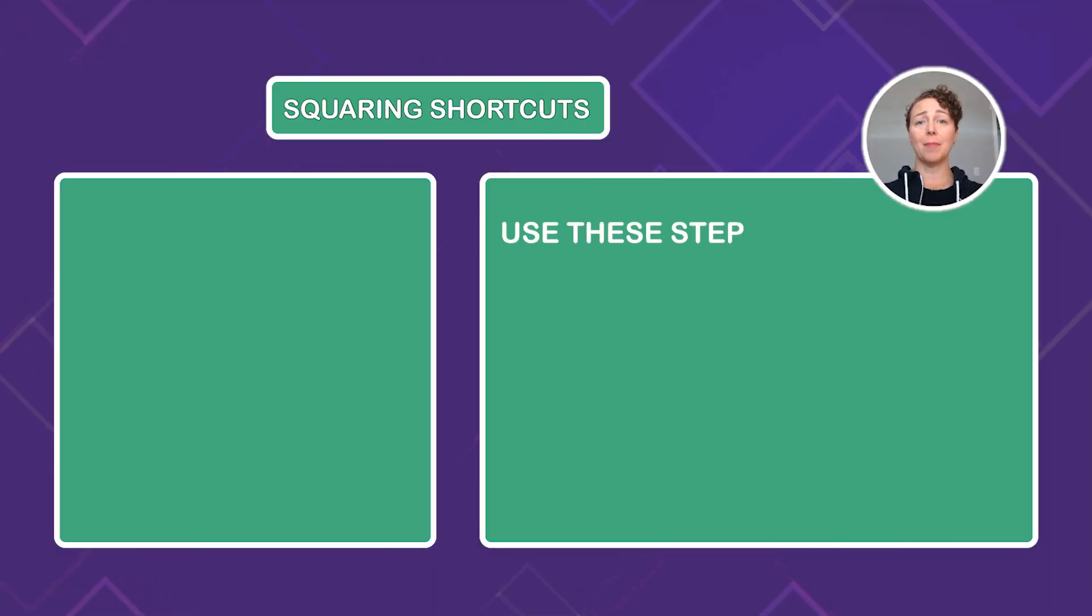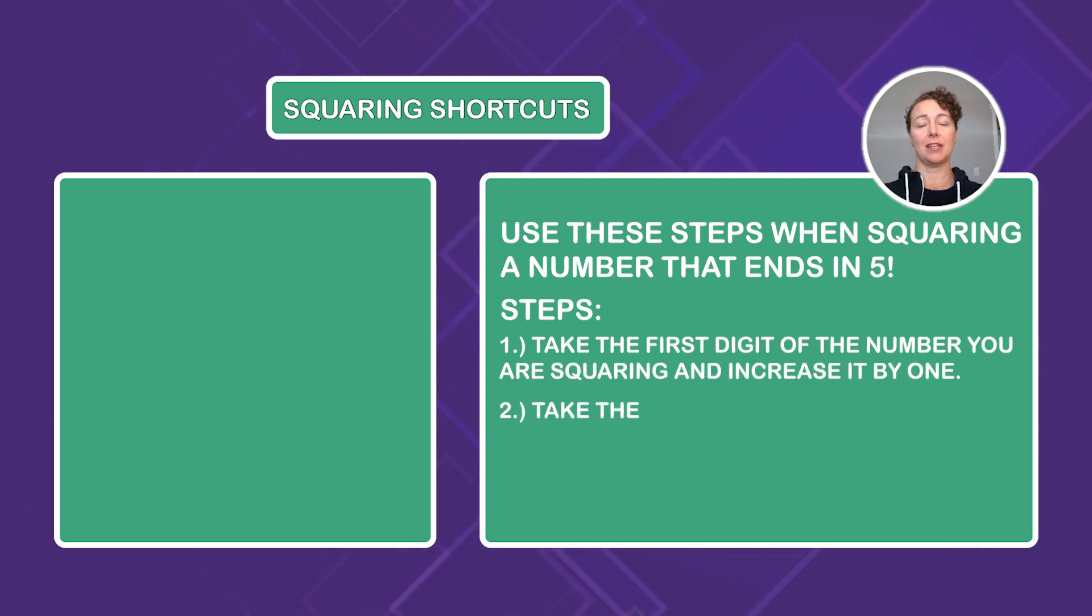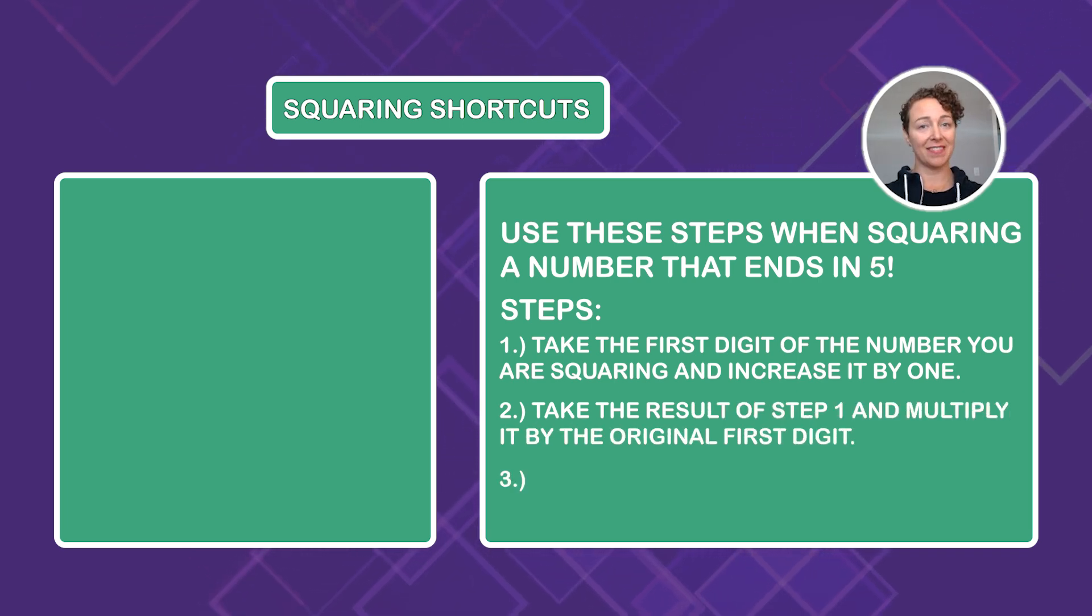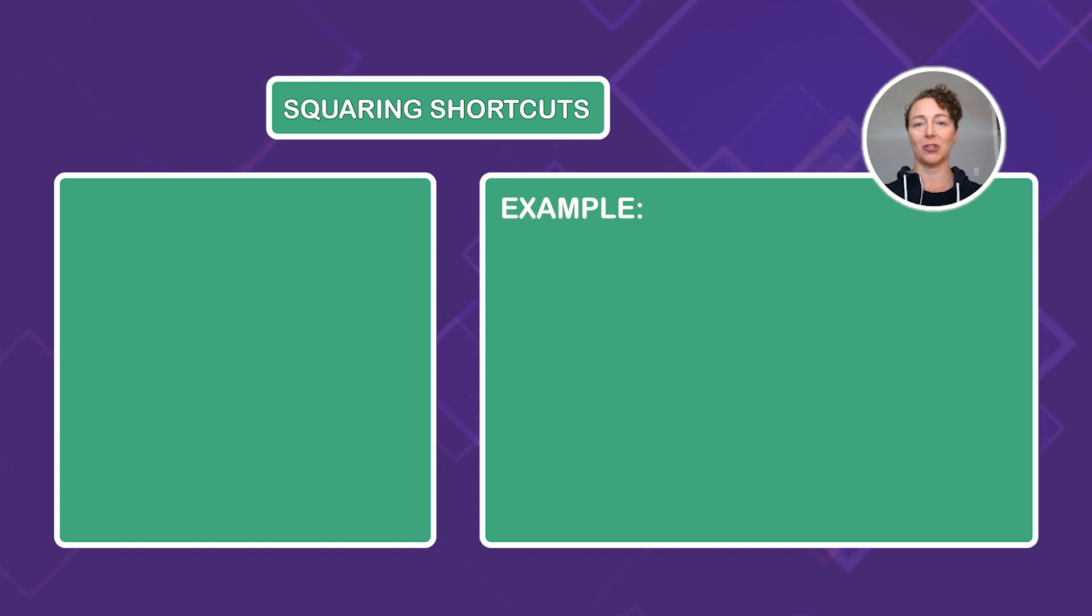For our next trick, I'm going to go through a pretty neat way to quickly find the result of squaring a number that ends in 5. The formula is simple. Here are the steps. First, you take the first digit of the number you are squaring and increase it by one. Next step, take the result of step one and multiply it by that original first digit. Finally, you're going to put 25 at the end, just stick 25 to the end of the result in step two, and you're done. At this point, you might be feeling a little bit confused, and that is totally understandable. This is going to make a lot more sense with an example. So let's do that.